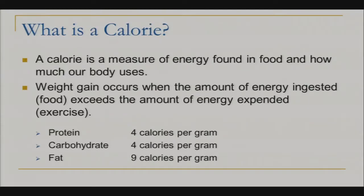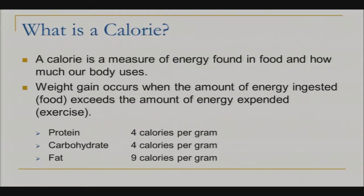Weight gain occurs when the amount of energy ingested — the food we take in — exceeds the amount of energy expended, the exercise that we put out. Remember, for protein there are 4 calories per gram. Carbohydrates is 4 calories per gram. And fat is 9 calories per gram.